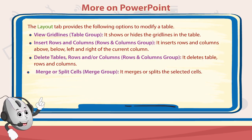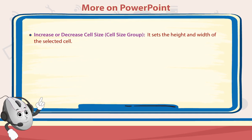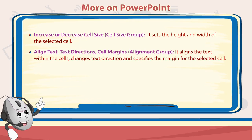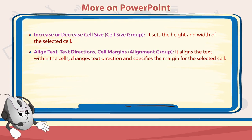Merge or Split Cells: The Merge group merges or splits the selected cells. Increase or Decrease Cell Size: The Cell Size group sets the height and width of the selected cell. Align Text, Text Directions, and Cell Margins: The Alignment group aligns the text within the cells.